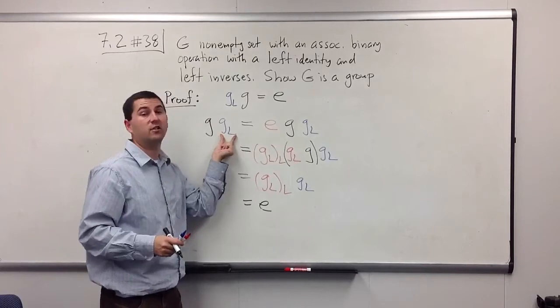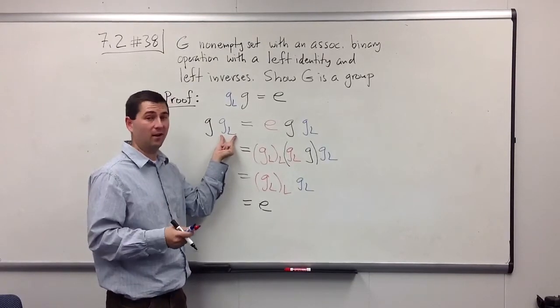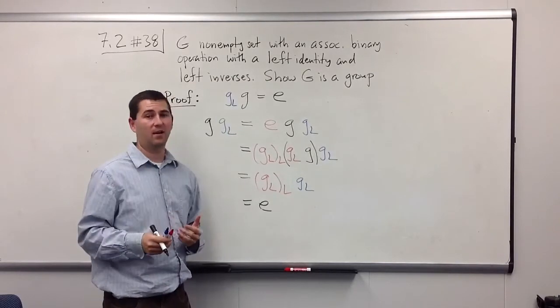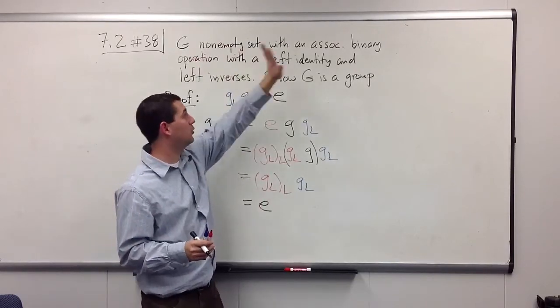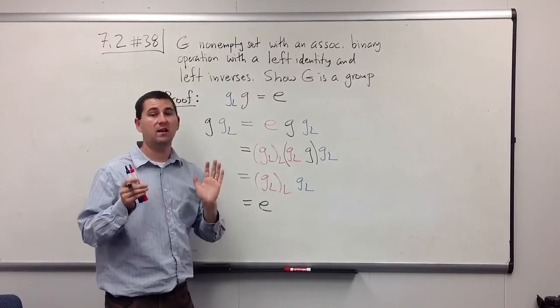Which means that g_l is not just a left inverse. It's also a right inverse, which means it's really a two-sided inverse. So all our inverses are both-sided inverses. They really are truly inverses. And so we now have a true two-sided identity. We have all two-sided inverses. And so G is actually a group.